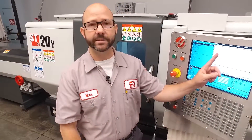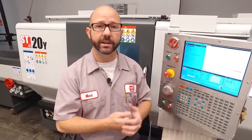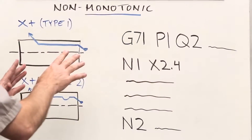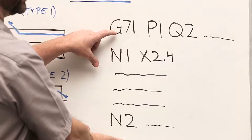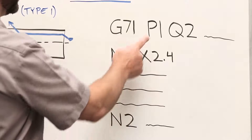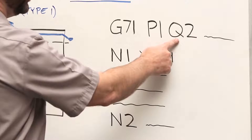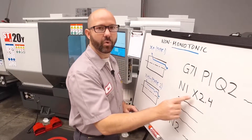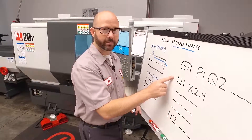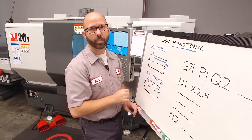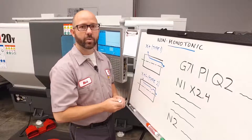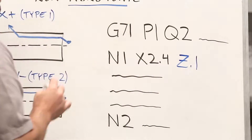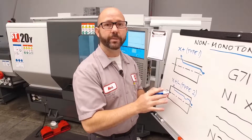My tool is coming up and then down and then back up again as it creates a groove on my part. We can now see that our X-axis is changing direction, which means we need to tell the control to use a Type 2 roughing cycle. Our G71 P and Q values define the contour subroutine that the roughing cycle is going to use. The P value refers to the starting block line and our Q value refers to our ending block. If we only use an X or a Z value on our starting block — one or the other — the control is going to default to a Type 1 cycle. To command a Type 2 cycle, we must command both an X and a Z value on our starting block. This is what lets the control know that we're going to be changing directions.